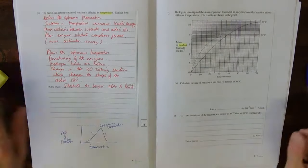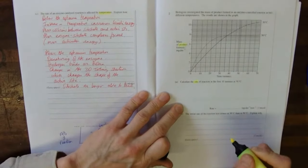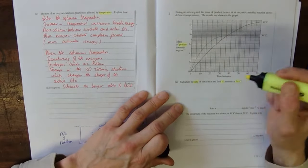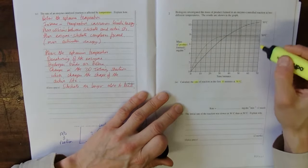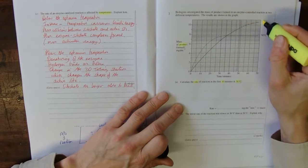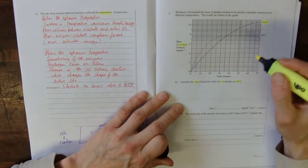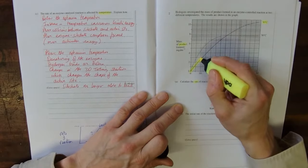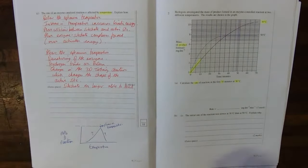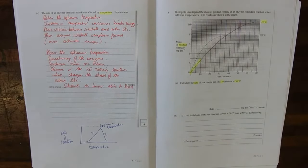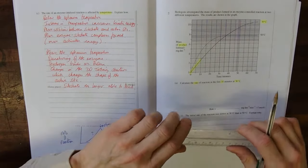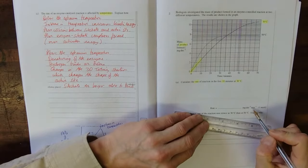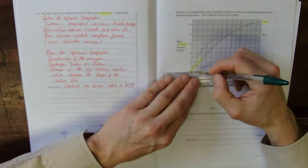So substrate is turning into product. Calculate the rate of reaction in the first 10 minutes at 30. So we are looking at, choose the right curve, so it's our 30 curve there. And the first 10 minutes. So we are looking at this here. And the rate is something over time. It's always something over time. And it's going to be the mass of product formed per minute. So 10 minutes. There's our 10 minutes there.